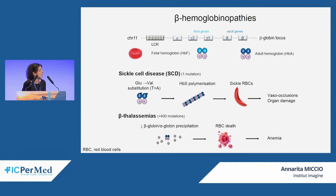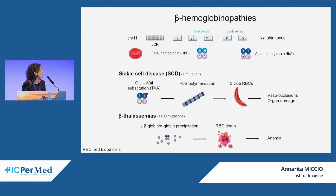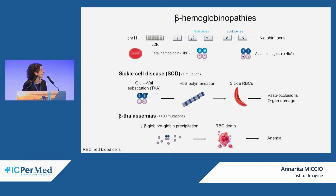Sickle cell disease is caused by a single unique point mutation that causes the substitution of valine for glutamic acid at position six of the beta-globin chain. This leads to polymerization of sickle hemoglobin, which in turn causes formation of sickle-shaped red blood cells that tend to obstruct small vessels, leading to multi-organ damage. In addition, these sickle red blood cells are very fragile and tend to be lysed in the bloodstream, so the clinical phenotype is also associated with anemia.